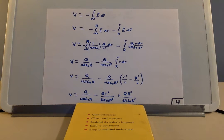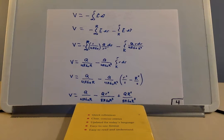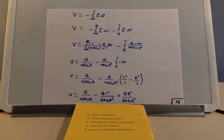Going down from that, the electric potential: the first integral simplifies to q over four pi epsilon naught r — as done in previous problems. Then we subtract from that, pulling out the constants: q over four pi epsilon naught R cubed, multiplied by the integral from big R to little r of r dr, which is the remaining part we need to evaluate.